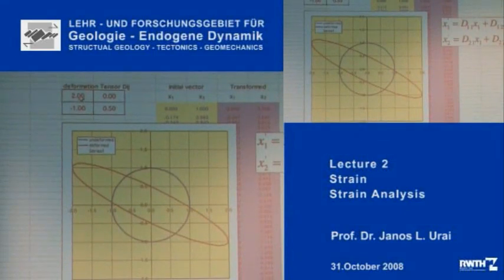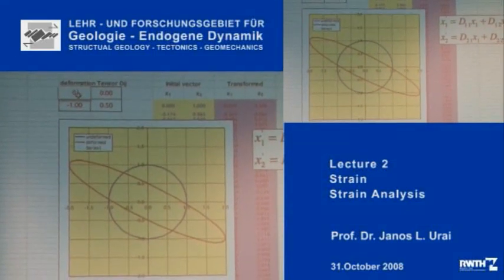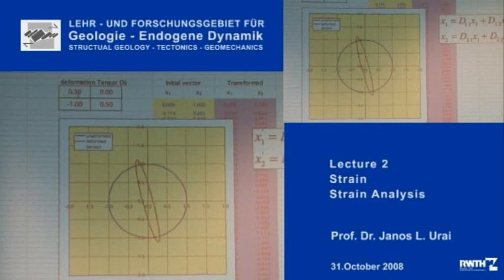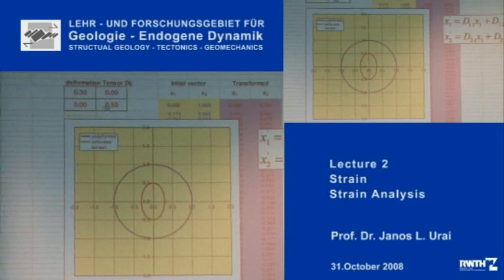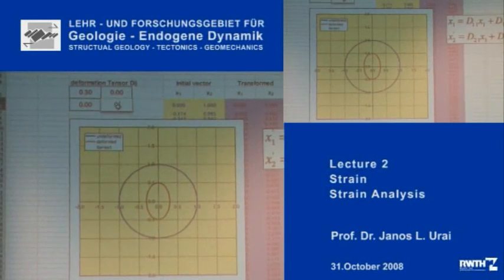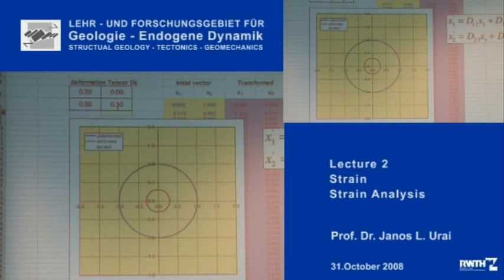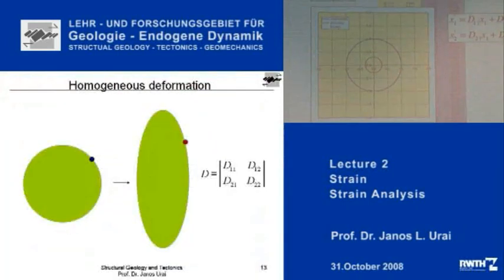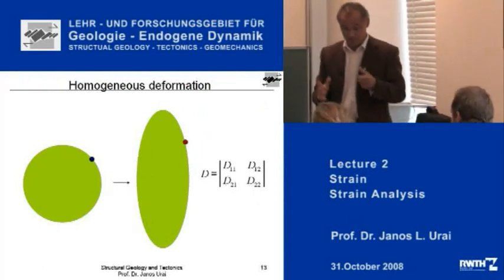If I put in 0.3, then the thing is going to get very small, and if I put back 0 here and 0.3, then the whole circle is very small and it looks like a fried egg. This is all very simple and I encourage you to try it out and play with it.